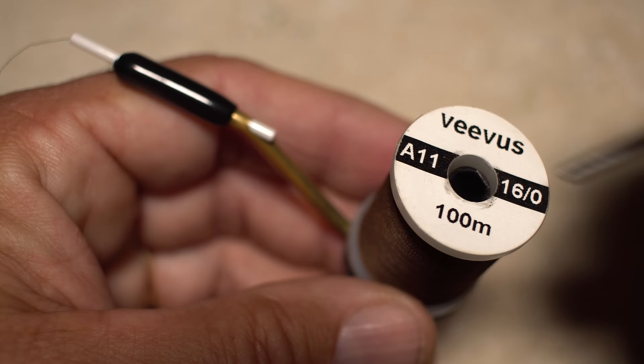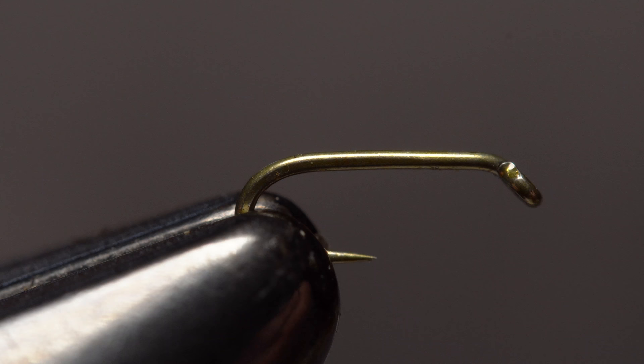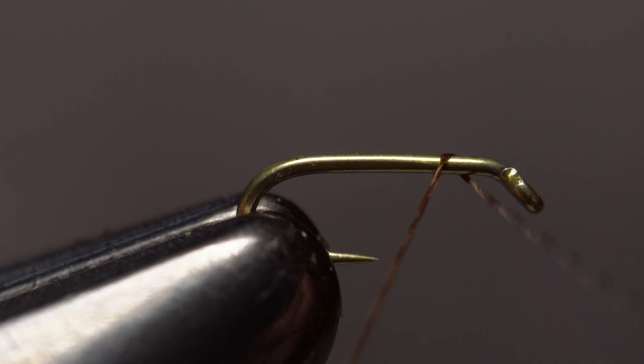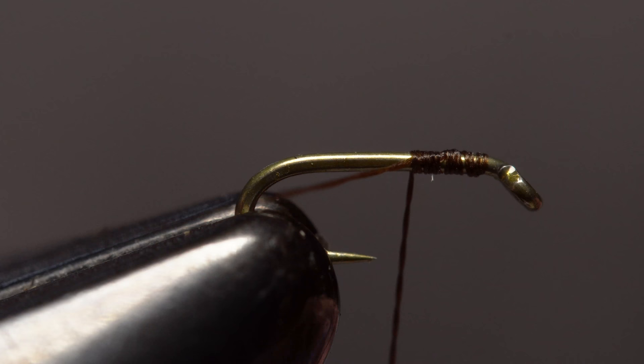For thread I'm going to go small with Vivas 16-aught in a dark brown. Start your thread on the hook shank leaving a little space behind the eye and take a few wraps rearward before snipping or breaking off the tag.